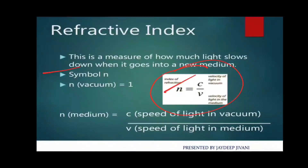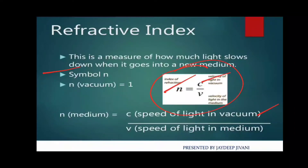The refractive index is symbolized by n. Here, c means the speed of light in vacuum — that is, the velocity of light in vacuum. This is used as a reference value in the formula.